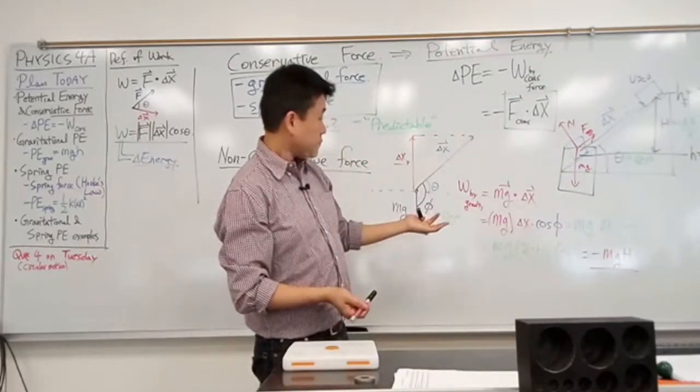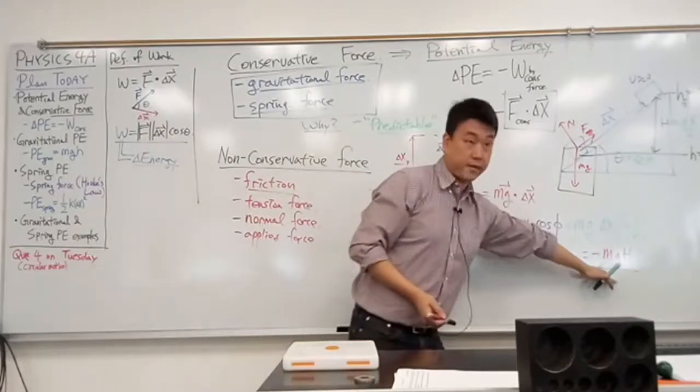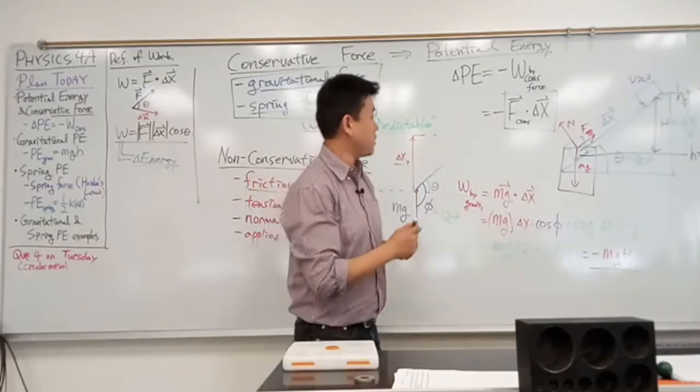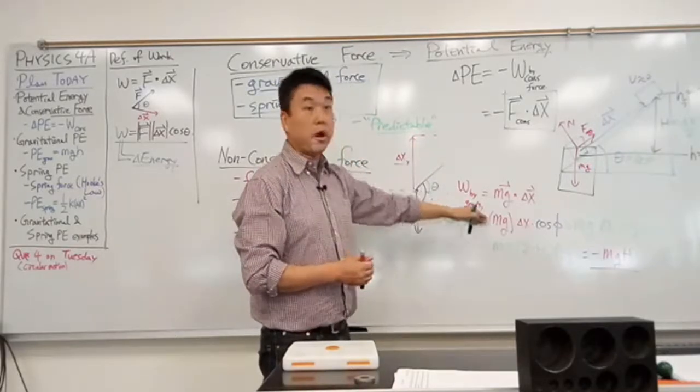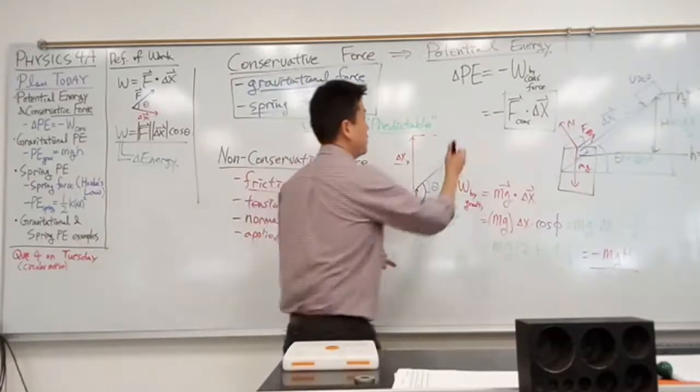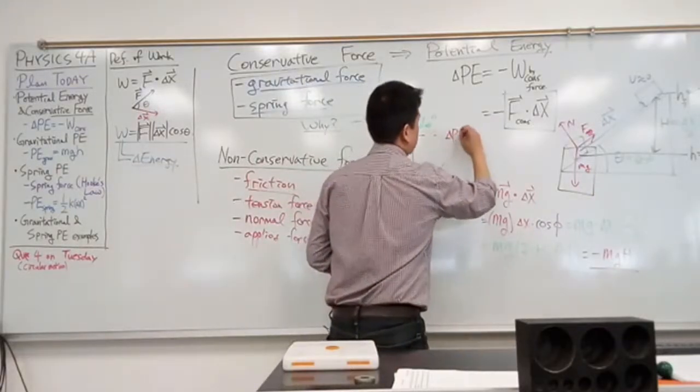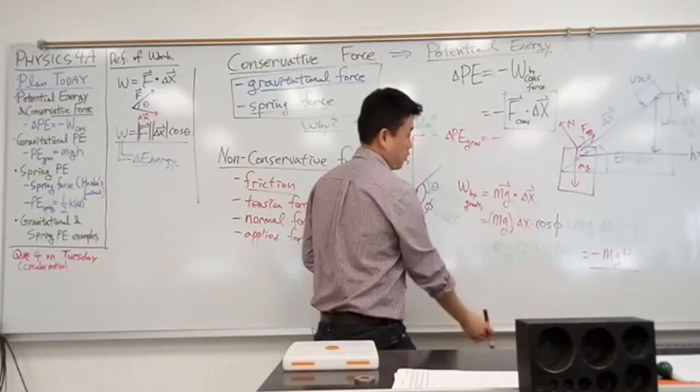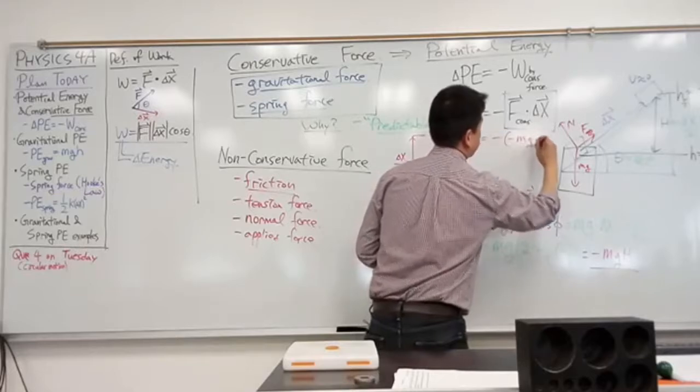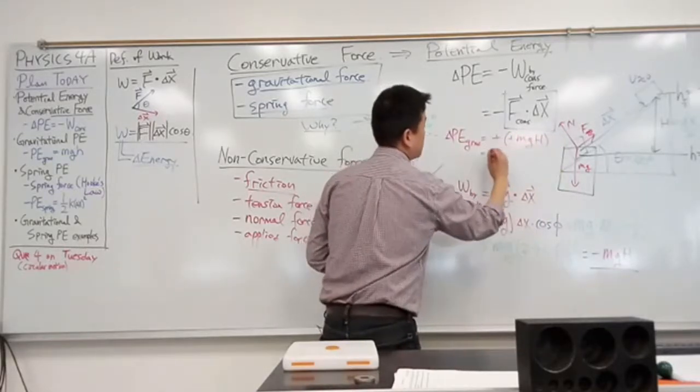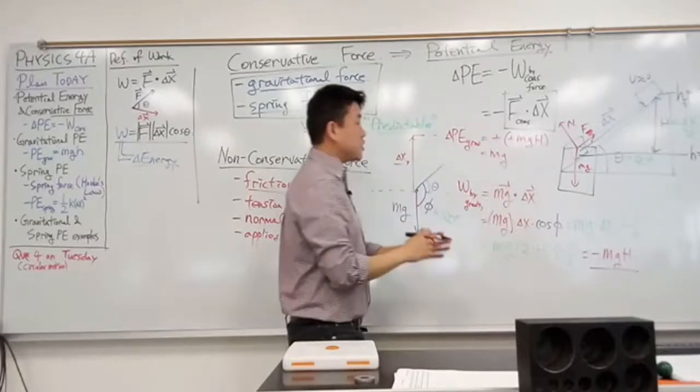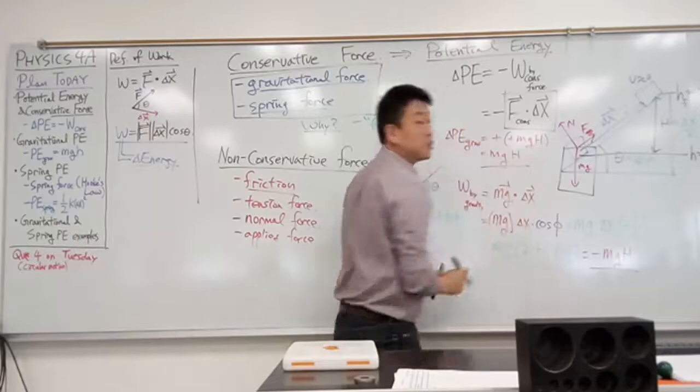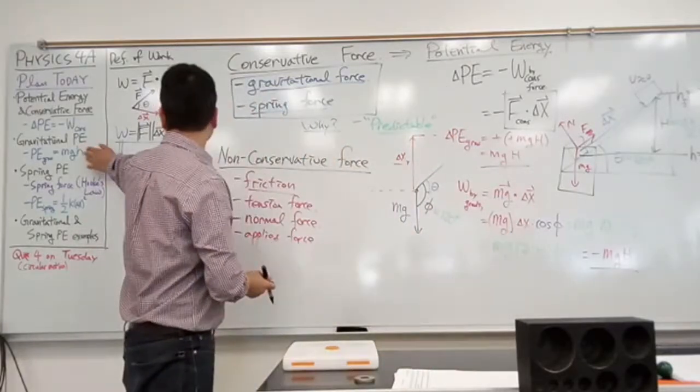So this is the work done by gravity. You use it here to derive the change in potential energy due to change in gravitational potential energy. So change in gravitational potential energy is equal to minus of all this work done, minus mgh. So these two minuses cancel. And so when there's a change in height of h, change in gravitational potential energy is mgh. And that was the formula that you were using last time.